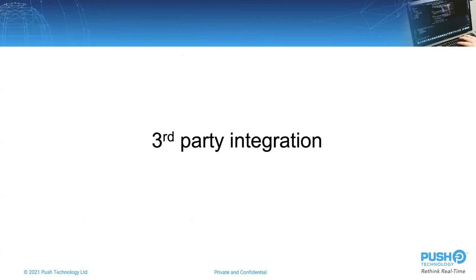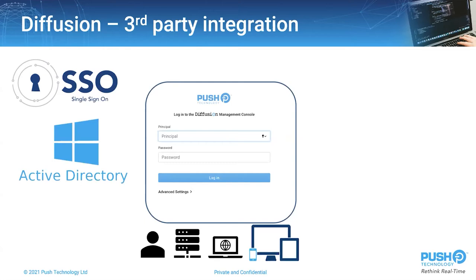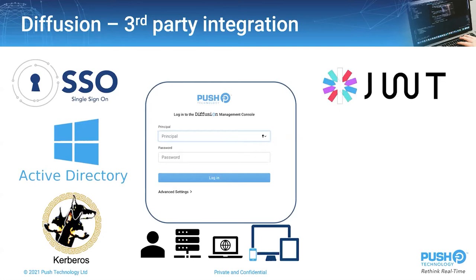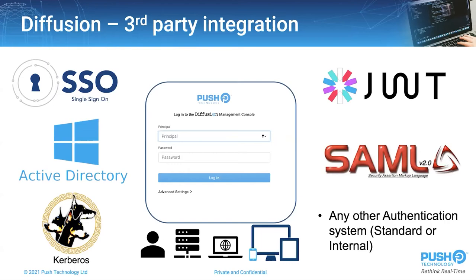Now we'll have a quick look at third-party integration. This takes us through some of the technologies that have been used to govern Diffusion clients across an enterprise. First, we have single sign-on, used extensively in capital markets for governing a huge employee base. We also have clients using Microsoft's Active Directory, and others using Kerberos for authenticating their users. We have clients that use JSON web tokens to define the claims each user can make, and others using SAML — a good example is the Okta protocol. And because it's an API, any other third-party identity provider or internally built permissioning system can be used.